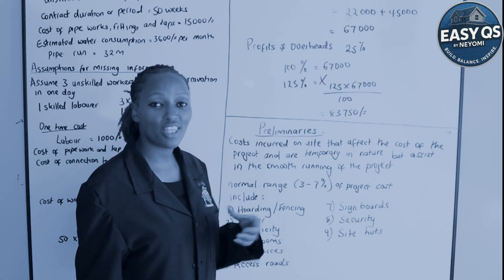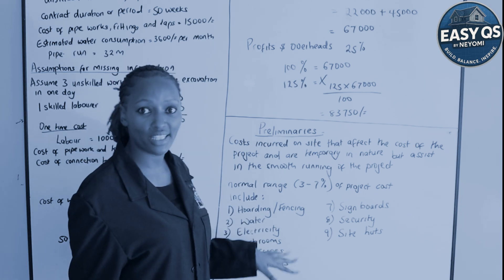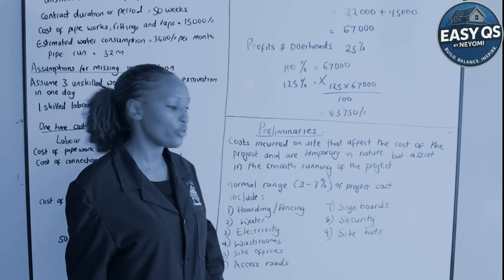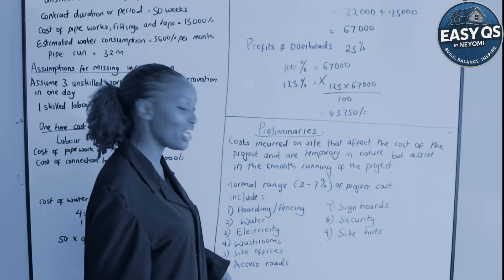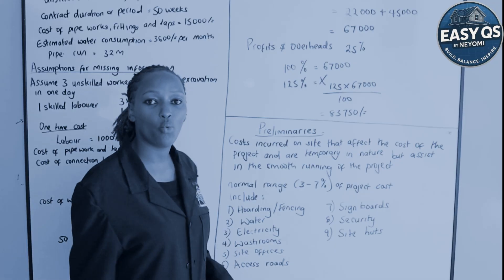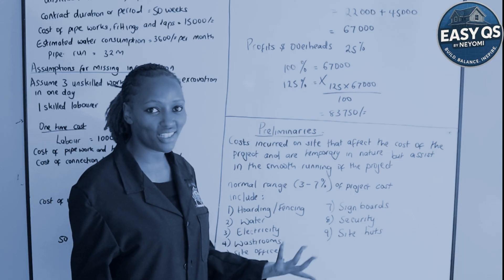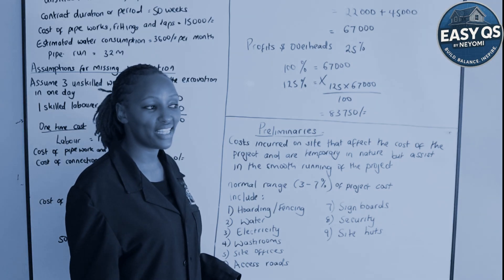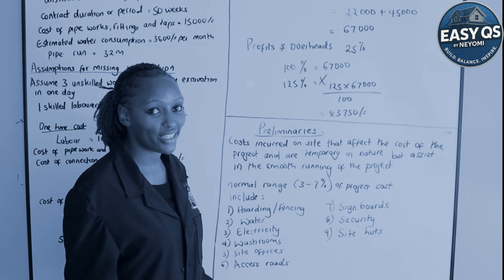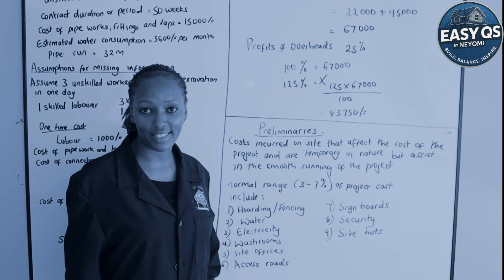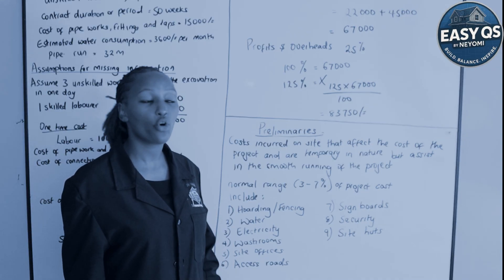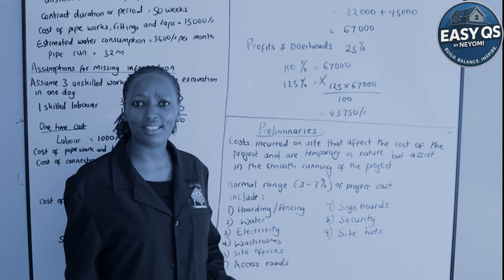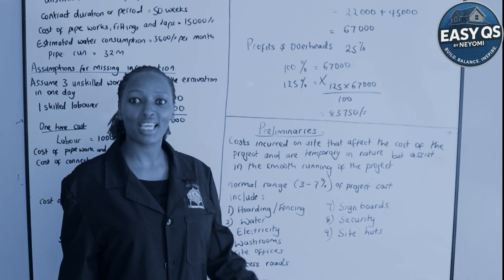Preliminaries include: first, hoarding or fencing — the fence you put on site. Second, water — the connection of water, which is what we shall be calculating today as our first example. Third, electricity — connecting it and paying electricity bills. Fourth, washrooms — you have to excavate for pit latrines and construct them, or connect to the sewer line. Fifth, site offices — these must be constructed for the people who will occupy them.